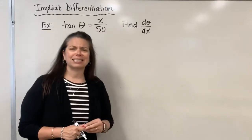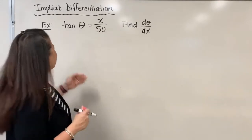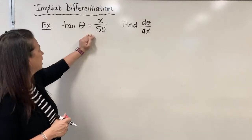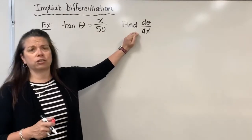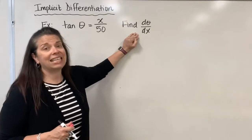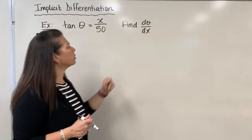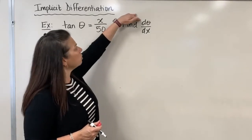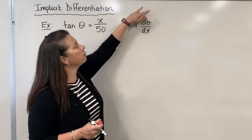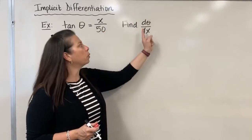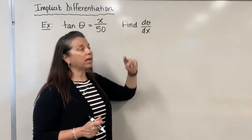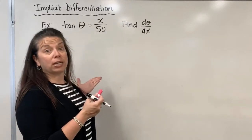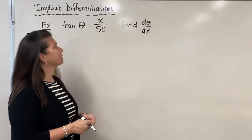Specifically I'm going to start with this tangent equation: tangent of theta equals x over 50, and our instructions are to find dθ/dx. It's important to understand what this notation is asking us to find — it literally says you're going to find the derivative of theta but with respect to x. So that's going to be important as we look at this equation that has both thetas and x's in it.